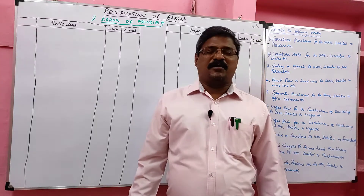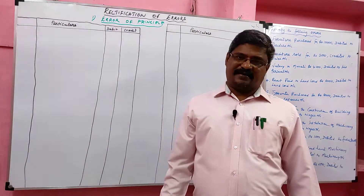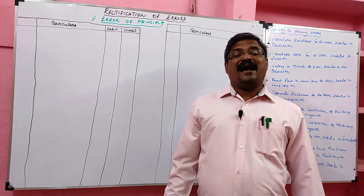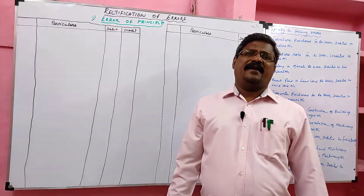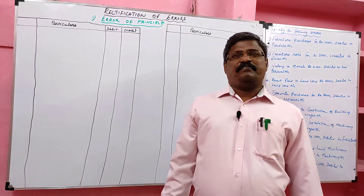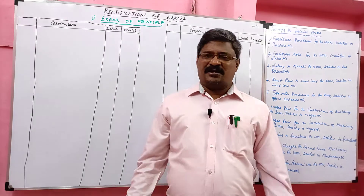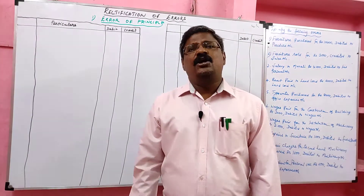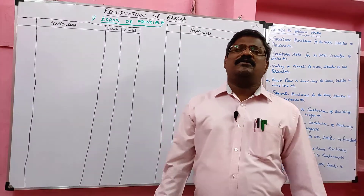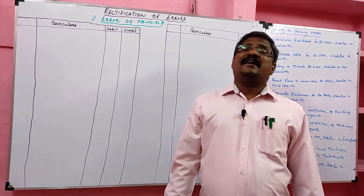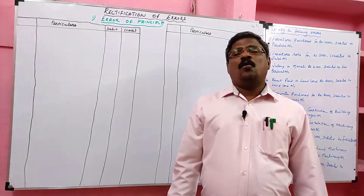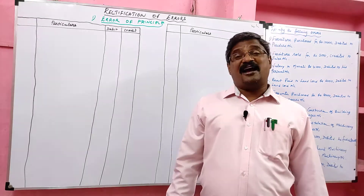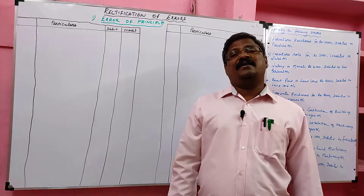Students, today we are going to learn about rectification of error. An error is a mistake committed by an accountant unintentionally in accounting. You may commit a mistake in journal entry, subsidiary book, ledger, or trial balance. Errors can be located before preparation of trial balance, at the time of preparing trial balance, after preparing trial balance, and after preparing final accounts.